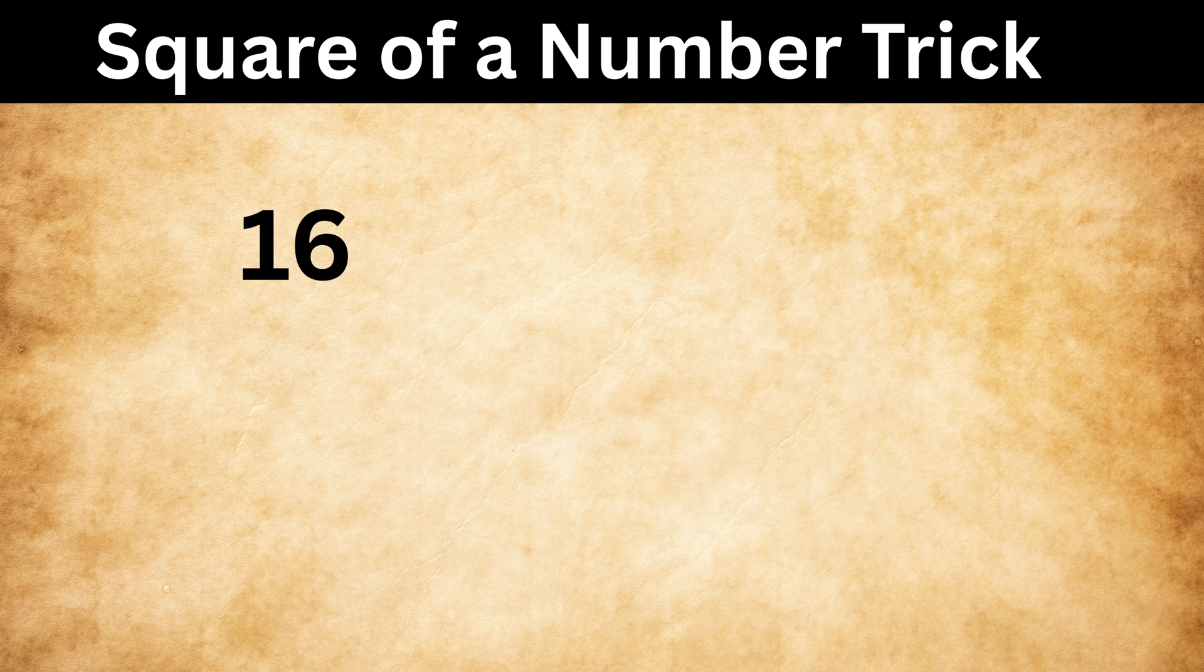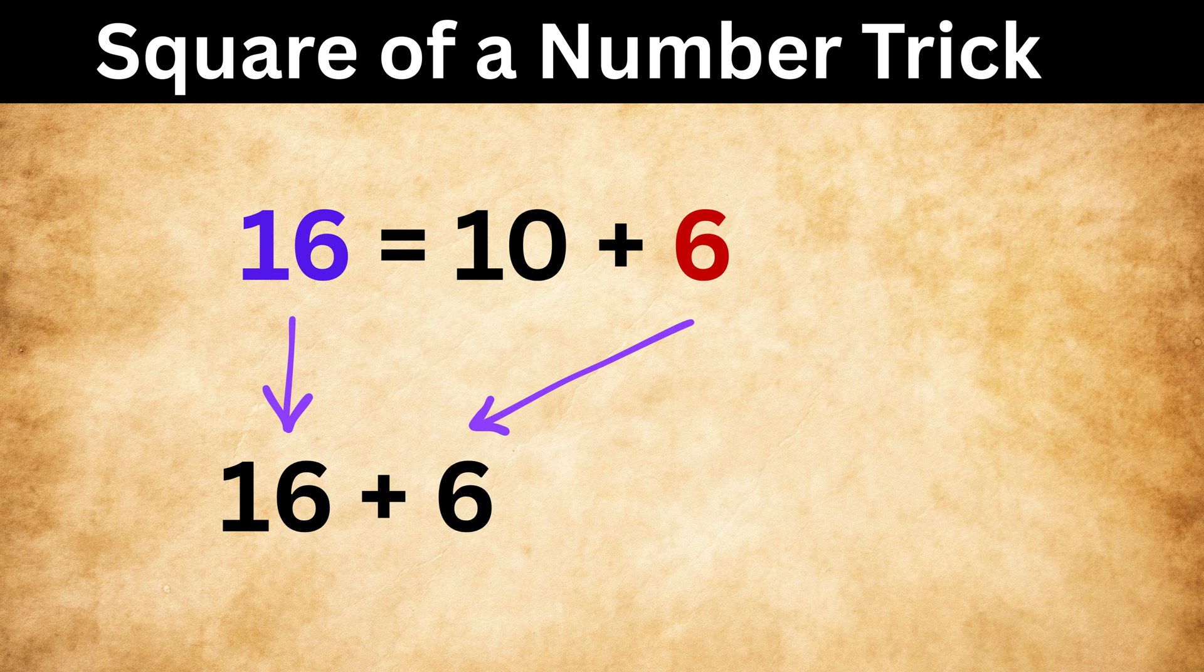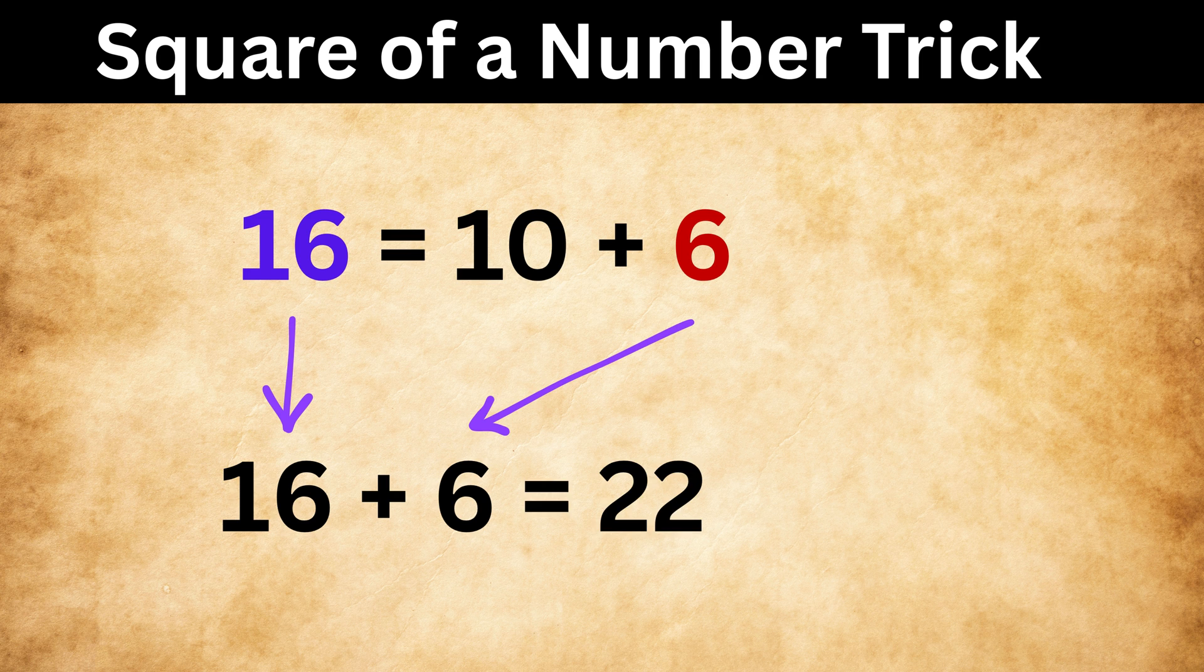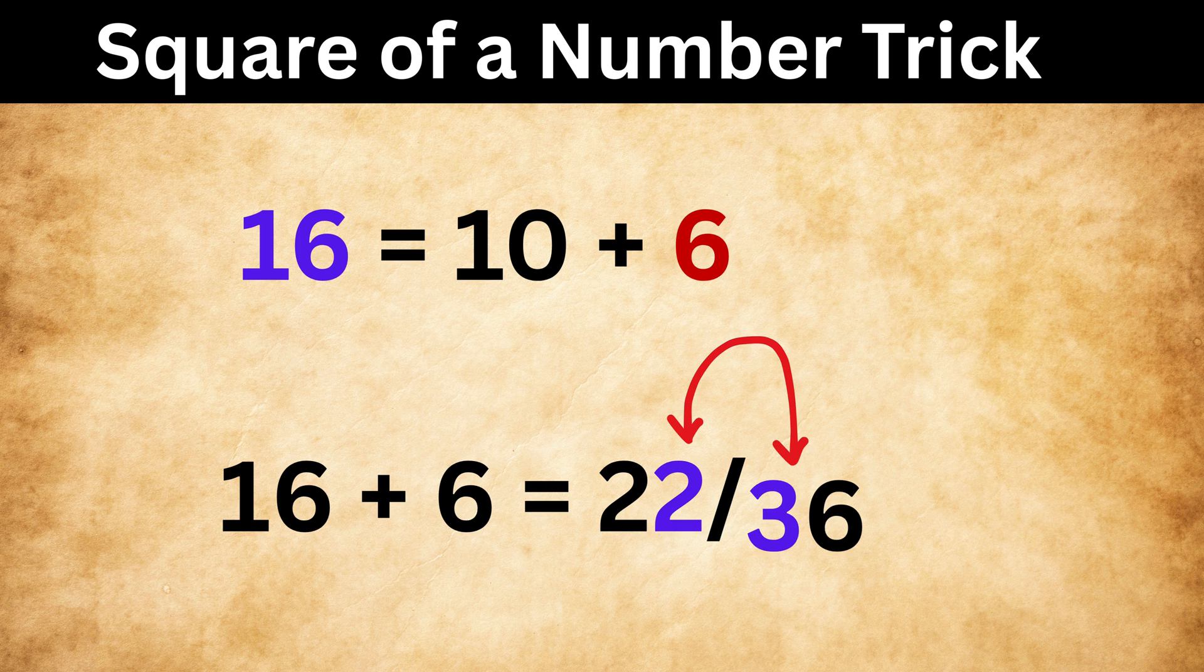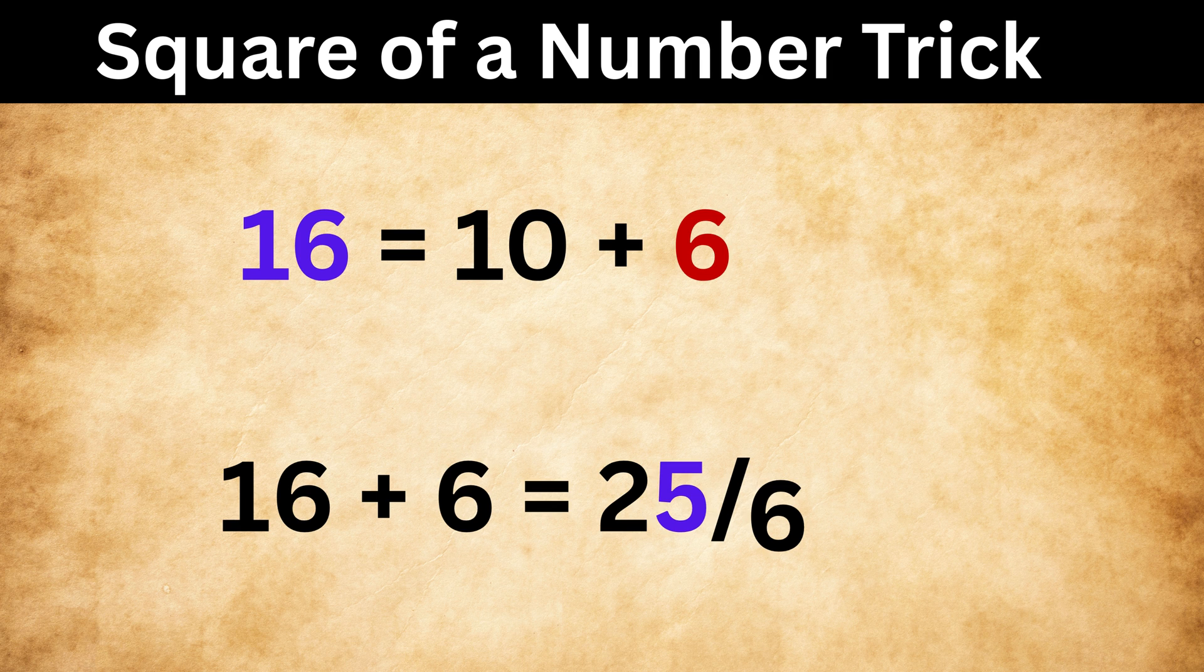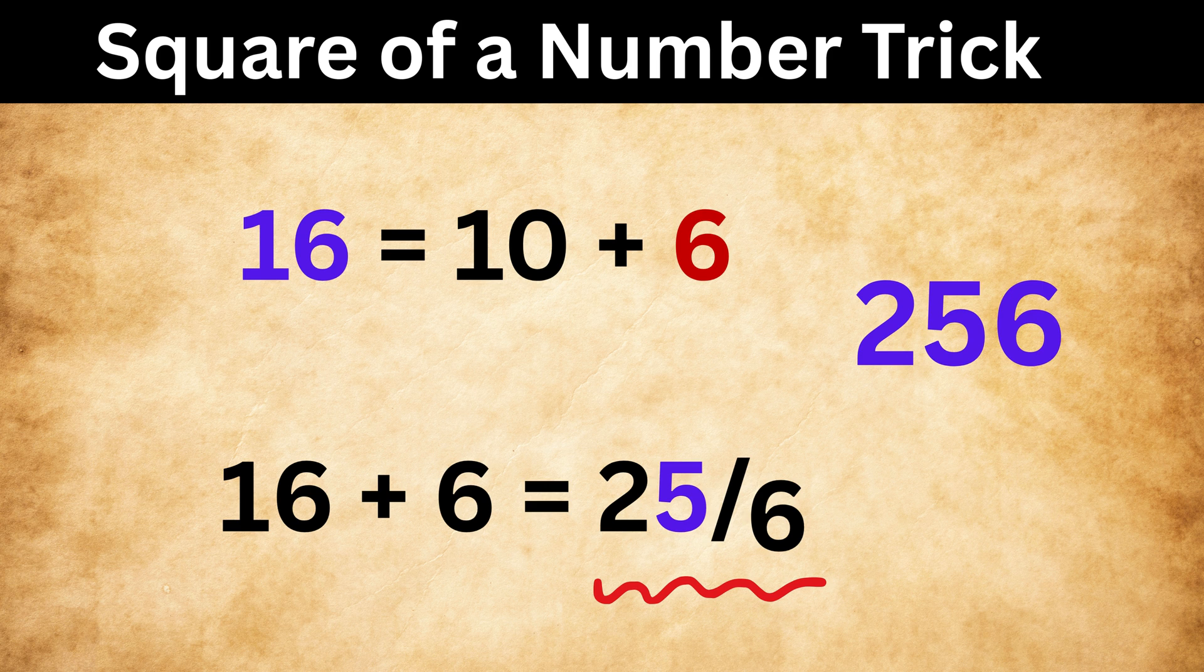Let us try with 16 square. Write 16 as 10 plus 6. So first we have 16 plus 6, or 22, right? Then put a slash, and write 6 square as 36. Now we know that 16 square is a 3-digit number. So add this 2 with this 3 to get 5. So 16 square is 256. And that's it. Super duper easy.